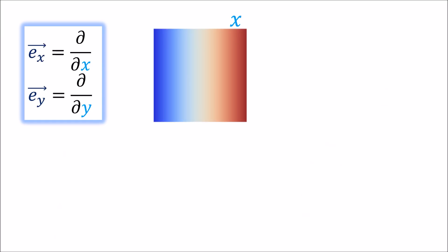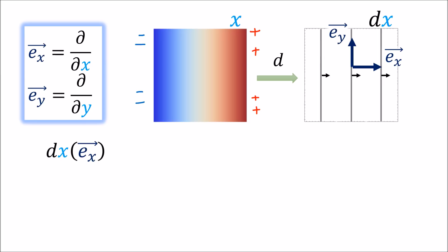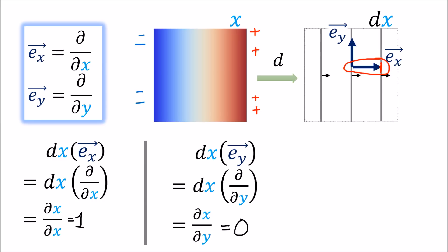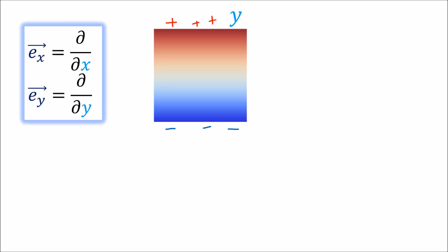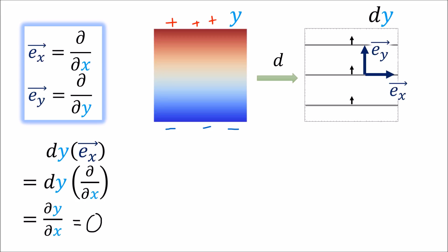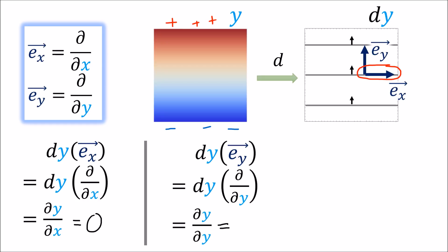Now let's look at the scalar field x, where the scalar value at a point is just the value of x — positives on the right and negatives on the left. Here's the corresponding covector field dx. dx of the ex basis vector equals the rate of change of x in the x direction, which is 1, matching the picture since ex pierces one line. And dx of the ey basis vector is the rate of change of x in the y direction, which is zero — ey pierces zero lines. Similarly for the scalar field y and its covector field dy: dy of ex is zero and dy of ey is one.